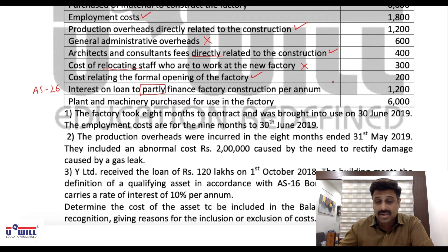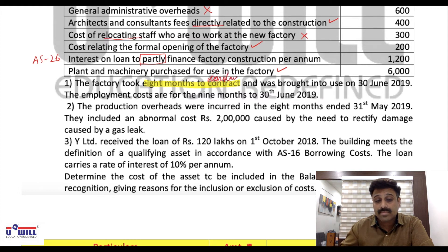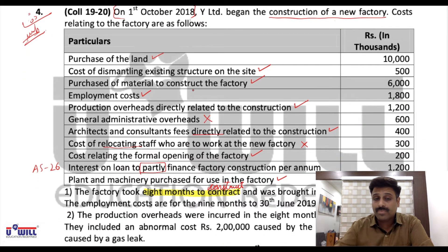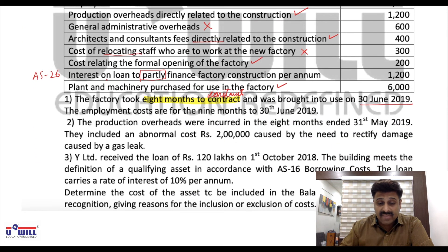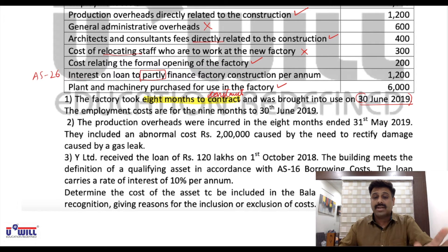Plant and machinery purchased for use in the factory is a directly attributable cost and will be included. The factory took 8 months to construct and was brought into use on 30th June. Counting from 1st October: October, November, December, January, February, March, April, May, June — that is 9 months total. But construction was completed in 8 months, meaning by 31st May.